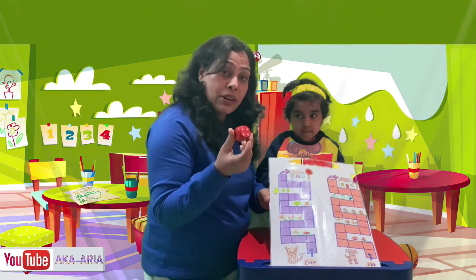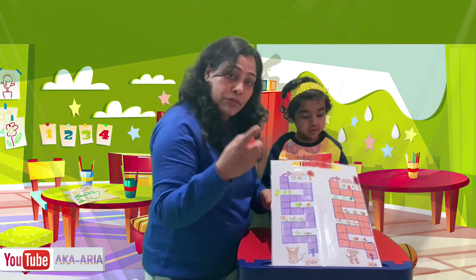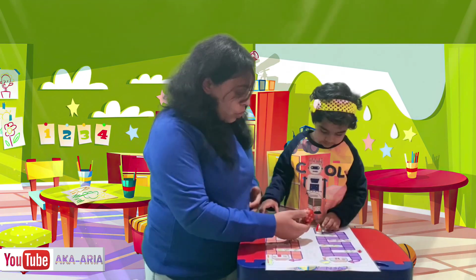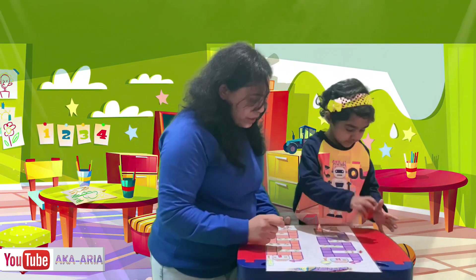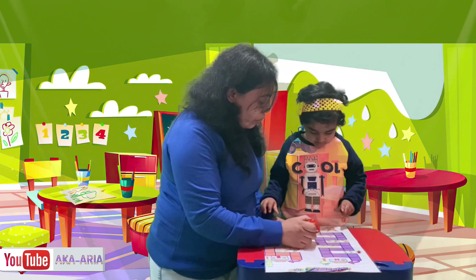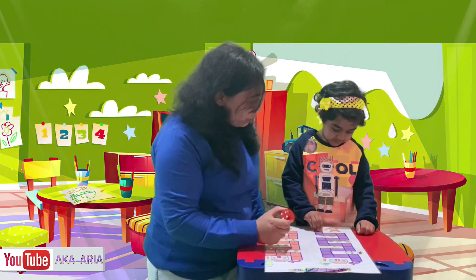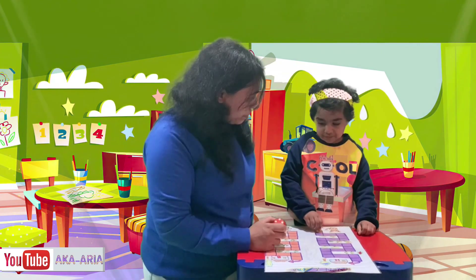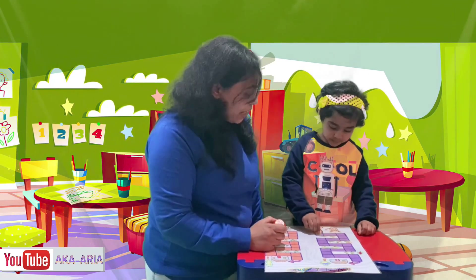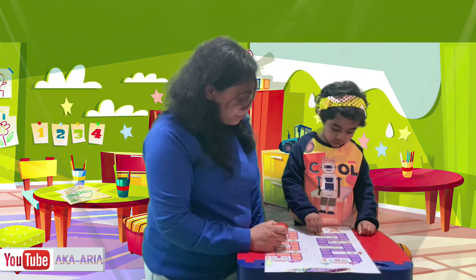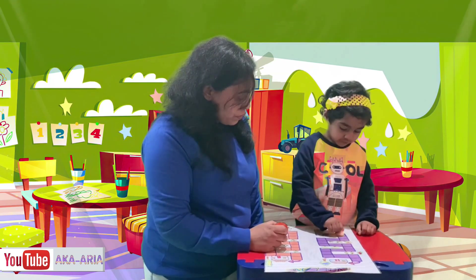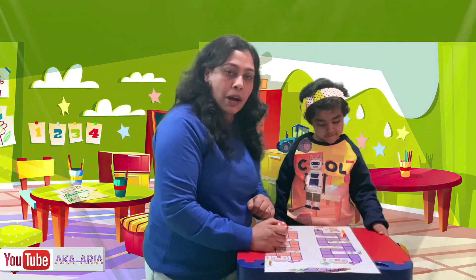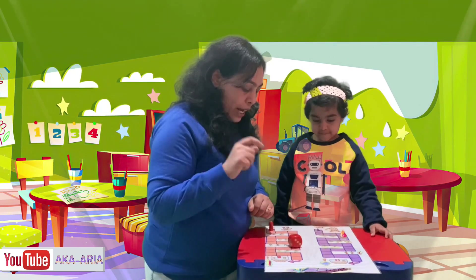So if 1, 3, or 5 comes on the dice, the dog will move forward, and if an even number comes, the cat will move forward. Roll the dice for me please! The number is 4. Is 4 odd or even? Even! So who will move — cat or dog? Cat will move! 1, 2, 3, 4 — cat will move 4 spaces up.